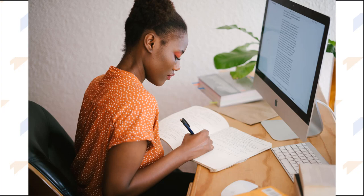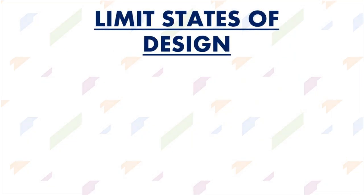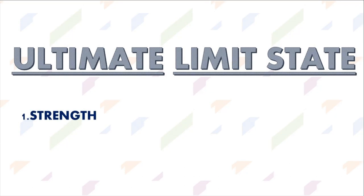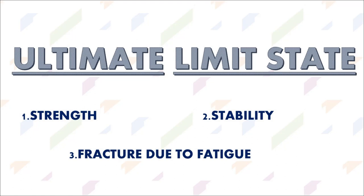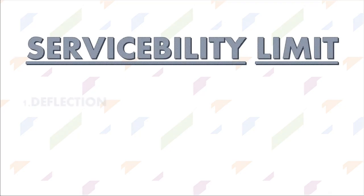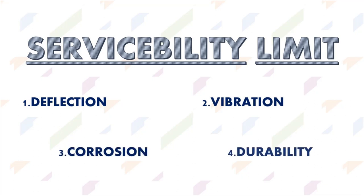Moving on, we need to understand the limit states before we start designing. Number one is the ultimate limit state, which governs: one — strength; two — stability; and three — fracture due to fatigue of the structure. Basically, failure occurs if this state is exceeded. Next up is the serviceability limit state, which governs deflection, vibration, corrosion, and durability of the structure.